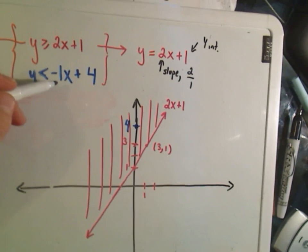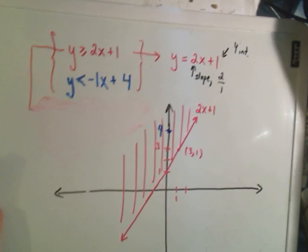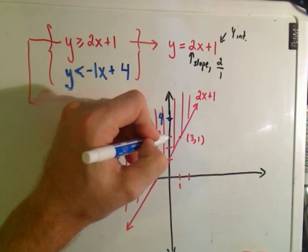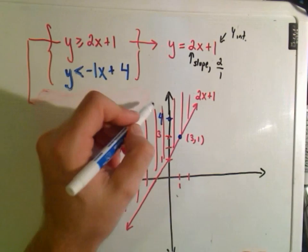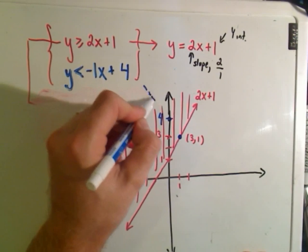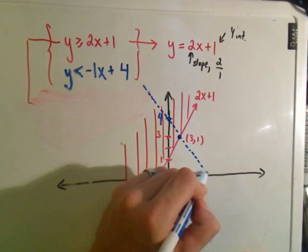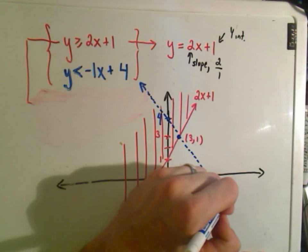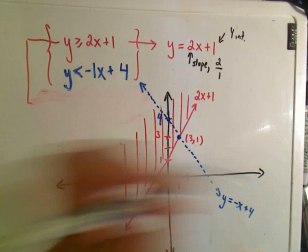And then it has a slope of negative 1. So what that means is, I have to go down one unit and to the right one unit. Okay, so if I go down one unit and to the right one unit, notice I'm going to intersect right here at this point. And since it's less than, we just shade it with a dashed line. Or we connect it with a dashed line, is usually the notation. So this is the line y equals negative x plus 4.